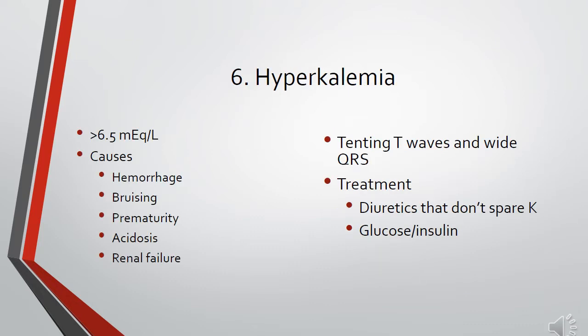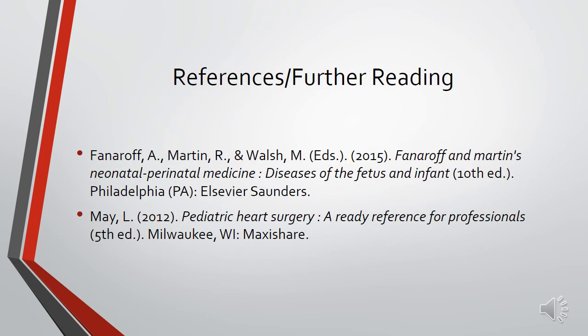Hyperkalemia isn't a dysrhythmia per se, but it can cause dysrhythmias. It's characterized by potassium greater than 6.5 mEq/L and can be caused by hemorrhage, bruising, prematurity, acidosis, or renal failure. On EKG you'll see tenting T waves or wide QRS complexes. Treatment is diuretics that don't spare potassium, causing the patient to excrete potassium, or glucose and insulin infusion to draw down potassium levels. That concludes the first lecture in this series, with references and further reading available.